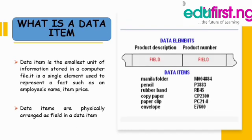Now let's go to data item. A data item is the smallest unit of information that is stored in a computer file. It is a single element used to represent a fact, such as an employee's name or a price. Data items are physically arranged as fields in a record. For example, the letters that make up the name 'Femi' are all alphabets, and together they form a field.